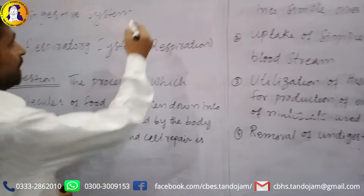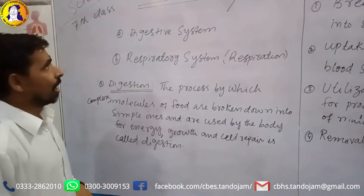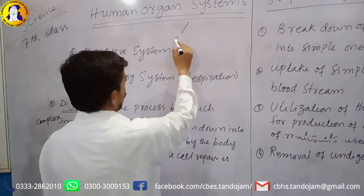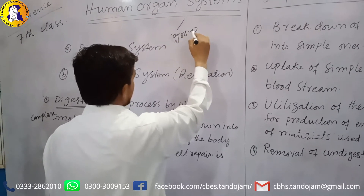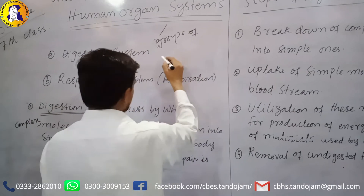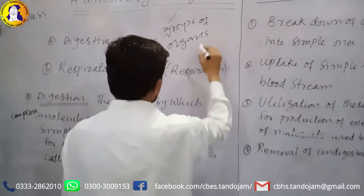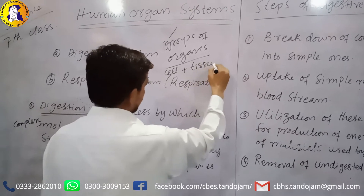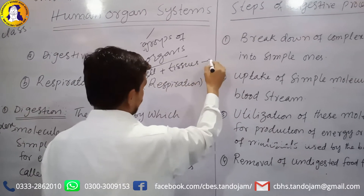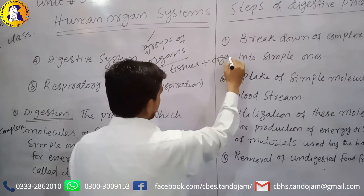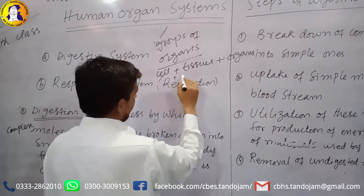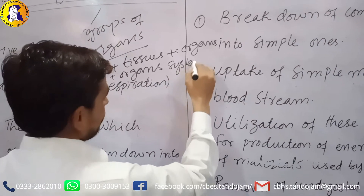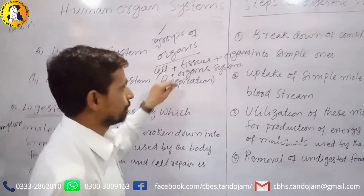Now, how are organ systems formed? An organ system is a group of different organs working together. The hierarchy goes from cell to tissues, from tissues to organs, and from organs to organ systems. Digestion is also an organ system, with different organs involved in the process of digestion.